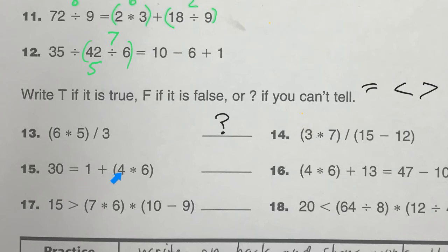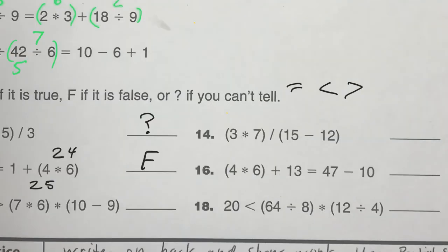Let's look at the one below there. We have 4 times 6. We know that is 24. 24 plus 1 is 25. 30 equals 25. That is false. That is not correct. And let's just look at one more. How about 18? So what do we have here? 64 divided by 8. If you know your square numbers, that is 8. 12 divided by 4 would give me 3. 8 times 3 is going to give me 24. And this says that 20 is less than 24. That is true.